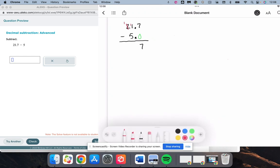That becomes a 1. That becomes an 11. 11 minus 5 is 6. Decimal stays lined up. And 1 minus 0 is 1. So we've got 16.7.